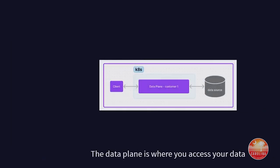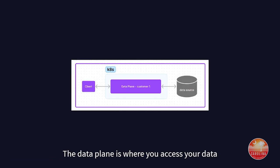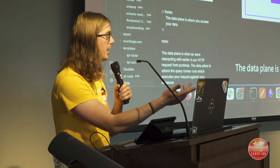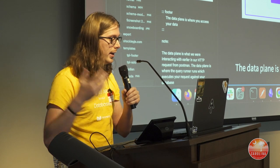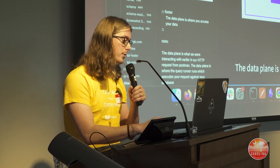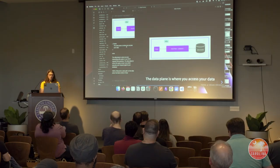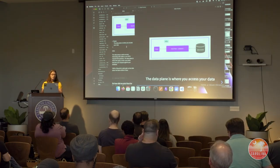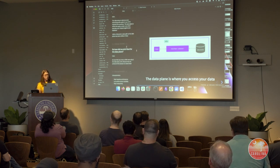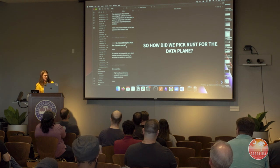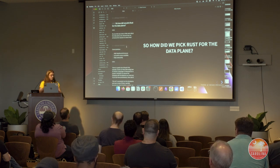Let's zoom in on that. When I showed that Postman request executing one of the OpenAPI-style REST endpoints, that was executing against the data plane. We were the client on the left side of the diagram — it was generating the SQL for that and executing it against a Postgres data source. We also support MongoDB, MySQL, and others are planned for the future. So how did we end up picking Rust for the data plane?